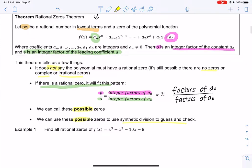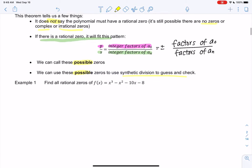And we're going to take these possible zeros and just use synthetic division to guess and check. So I think right now it probably doesn't make sense. So we're just going to jump into an example to make sense of this. So what we're going to find is we're going to find the possible zeros using this theorem. I think after an example it will make more sense.